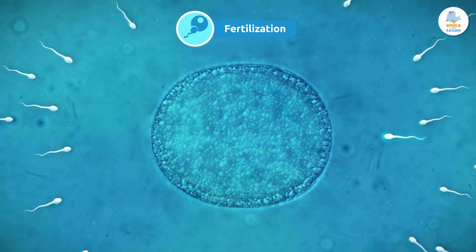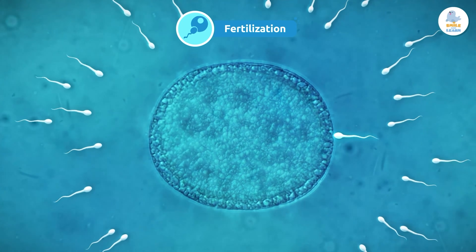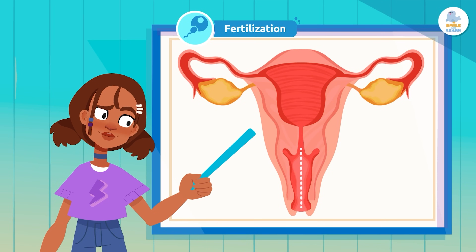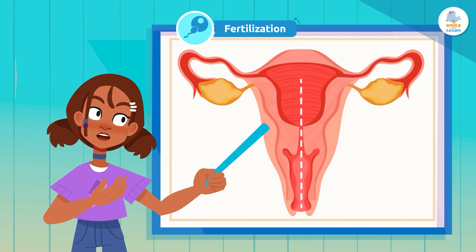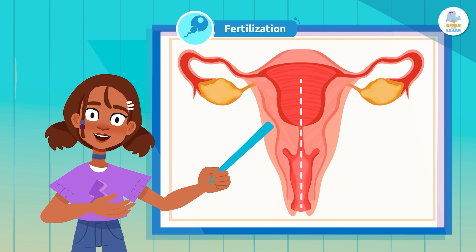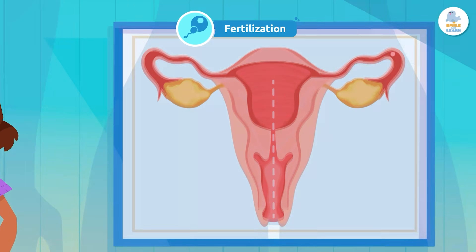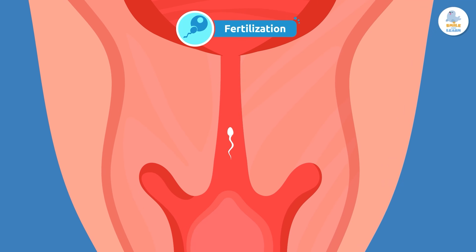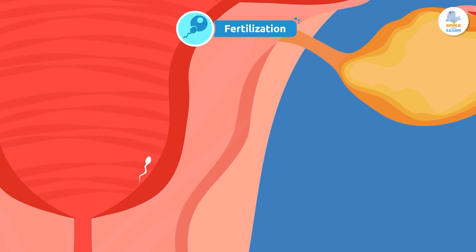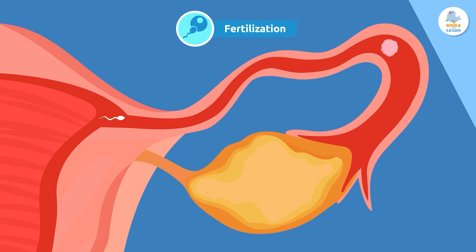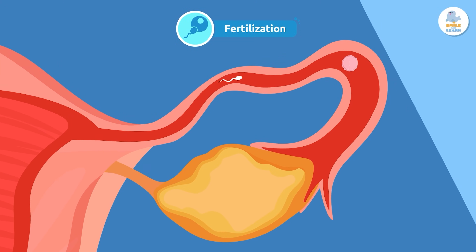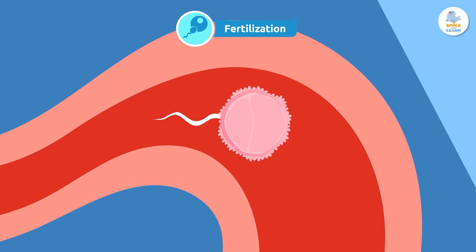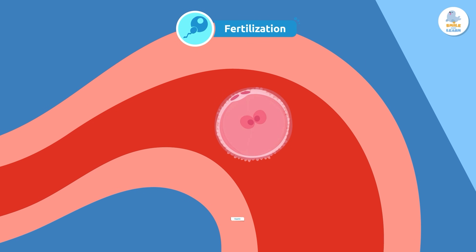Only one sperm cell will manage to penetrate the egg's membrane — one in a million! Incredible, isn't it? Before reaching the egg, the sperm must complete a great challenge: first it passes through the vagina, then the uterus, and finally it reaches the fallopian tubes where the egg is.